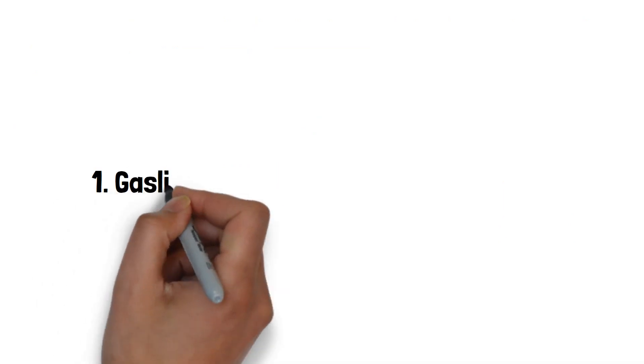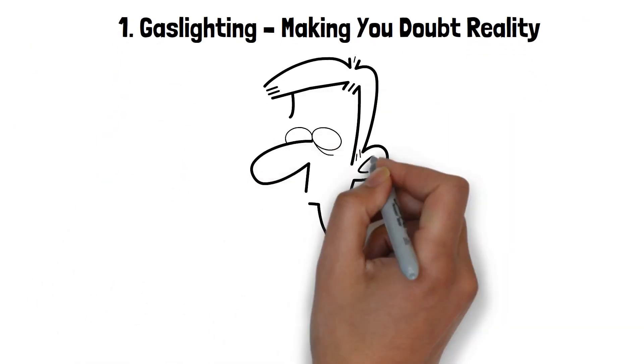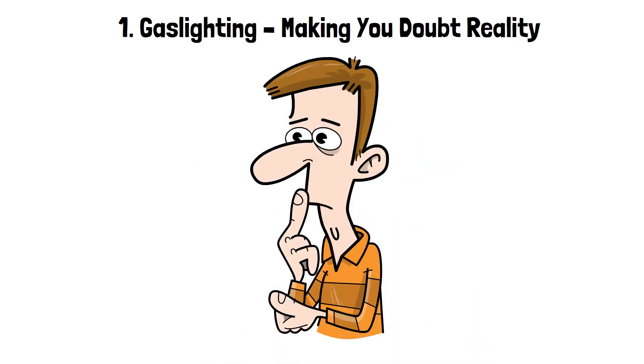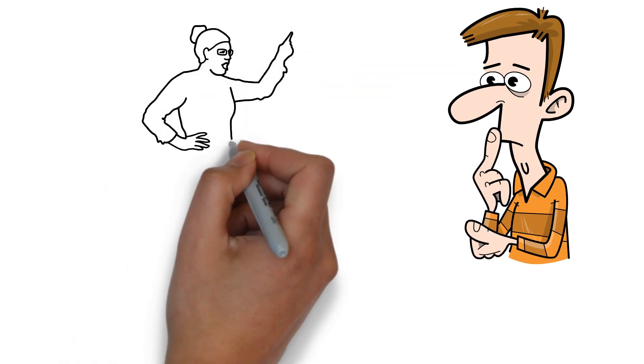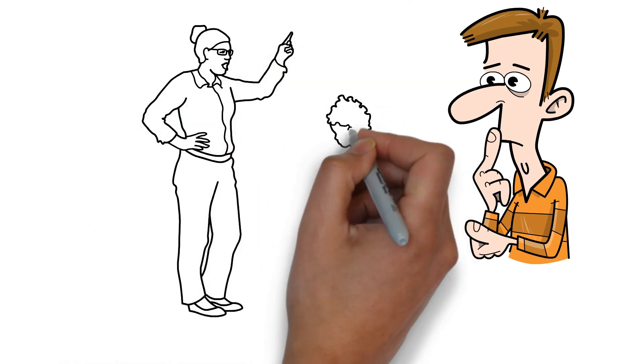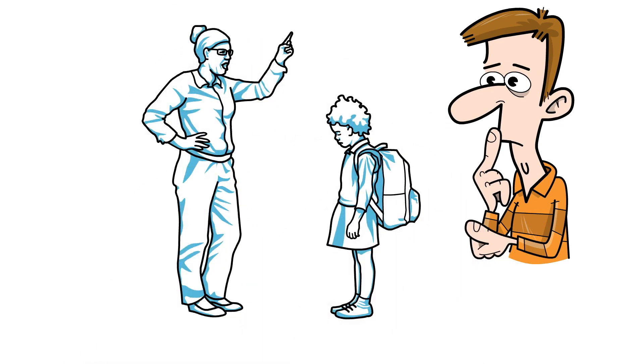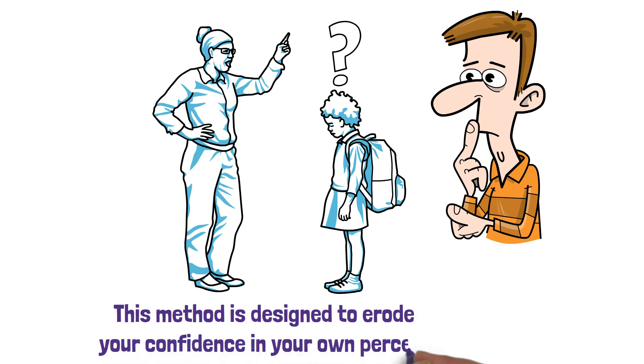1. Gaslighting. Making You Doubt Reality. Gaslighting is one of the most insidious forms of manipulation. Imagine you're sure about something you saw, heard, or felt, but the manipulator twists the narrative, making you question your own reality. Over time, their vision becomes the truth, even if it's entirely fabricated. This method is designed to erode your confidence in your own perceptions.